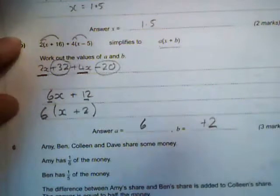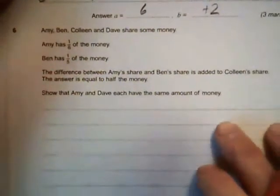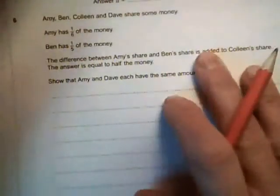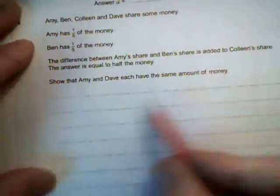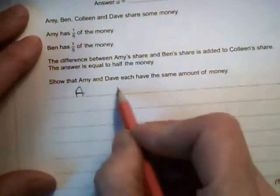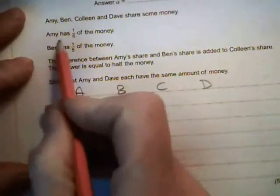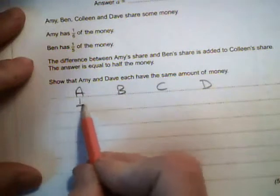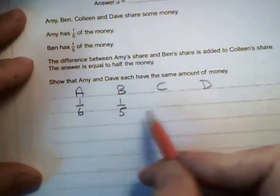Going on to question 6 straight away, another problem-solving type question. Luckily we've got A, B, C and D. So Amy, Ben, Colleen and Dave. Amy has 1/6 of the money, so 1 sixth for Amy. Ben has 1/5, 1 fifth for Ben.